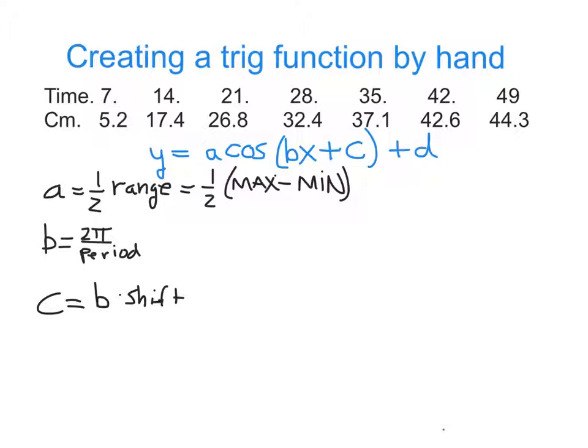And finally, to find out what D is, D is the midrange. It'd be half the max plus the min, or in other words, the average of the max and the min.